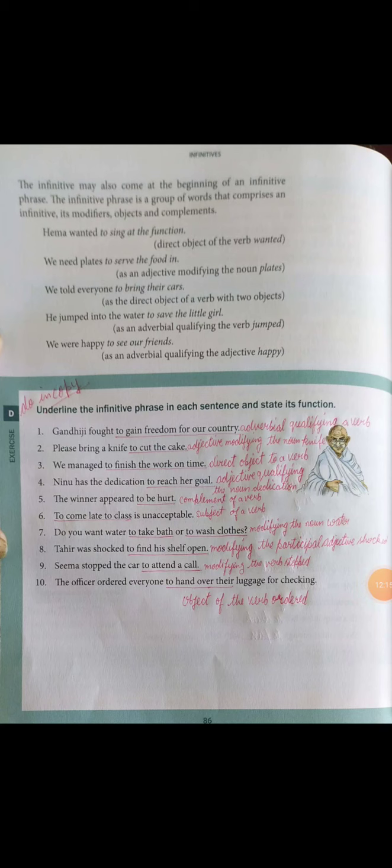The infinitive may also come at the beginning of an infinitive phrase. An infinitive phrase is a group of words that comprises an infinitive, its modifiers, objects, and complements. For example: 'We need plates to serve the food in' — adjective modifying noun 'plates.' 'We told everyone to bring their cars' — direct object. 'We jumped into the water to save the little girl' — adverbial qualifying 'jumped.' 'We were happy to see our friends' — adverbial qualifying adjective 'happy.'